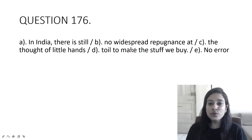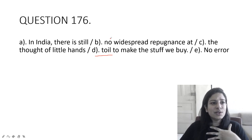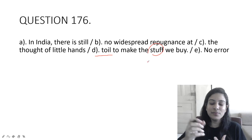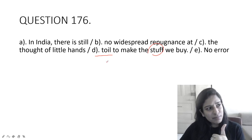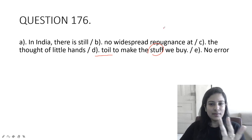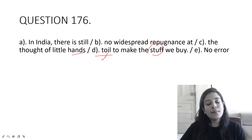In India there is still no widespread repugnance at the thought of little hands toil to make the stuff we buy. The error here is toil should be toiling. Repugnance means when we show hatred for something. So in India there is still no widespread repugnance, meaning we still don't realize that child labor, those little hands who make the stuff we buy, child labor is still happening. There is no hatred for child labor in India. So little hands toiling, we need to give present participle. It will not be toil but toiling.